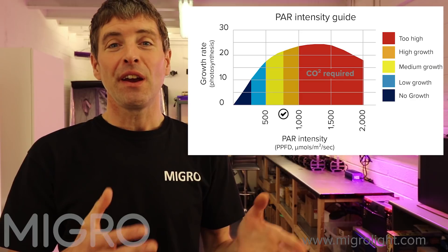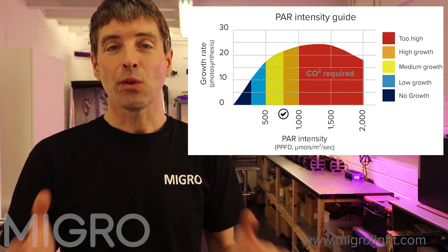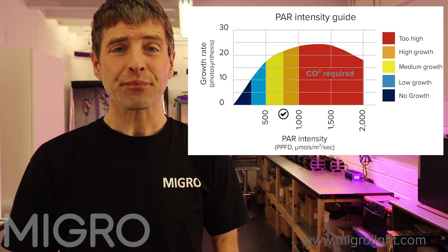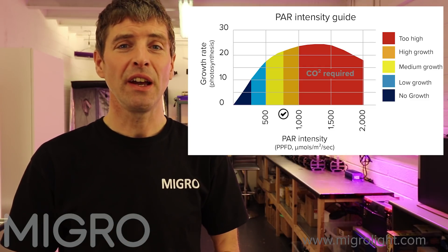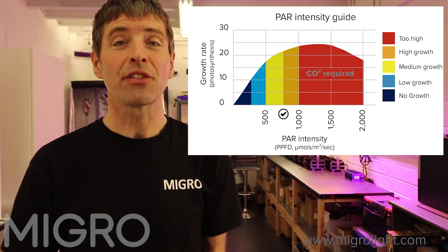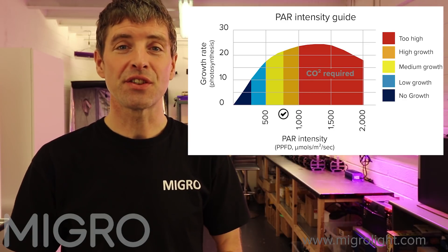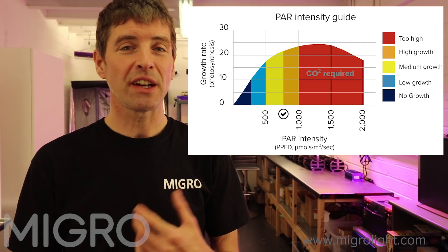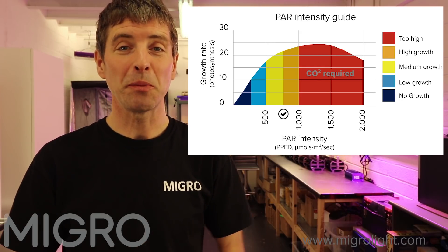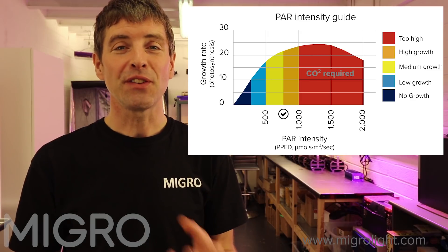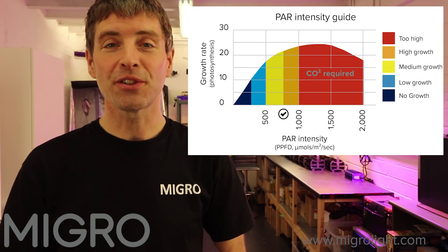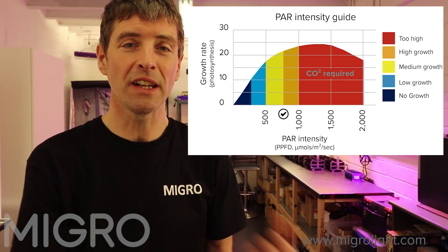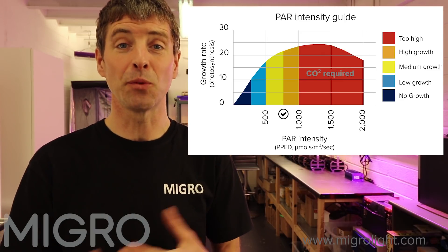However, it's also shown that once you get past around 700 or 800 micromoles per meter squared per second, the rate of growth that you get is not really worth the amount of extra light energy that you're having to input into the plant. So it's generally accepted that around 700 or 800 micromoles per meter squared per second is the best trade-off between getting maximum growth and not having to use too much energy, along with all the heat and everything else that comes with it.